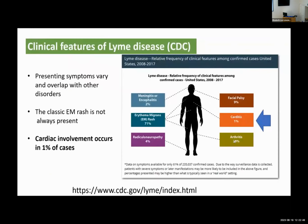This slide shows the clinical features of Lyme disease from the CDC. Lyme disease presenting symptoms vary and overlap with other disorders. The classic EM rash is not always present. Cardiac involvement occurs in 1% of cases. This chart shows the relative frequency of clinical features among confirmed cases in the United States from 2008 to 2017: 2% meningitis, 71% EM rash, 4% neuropathy, 9% facial palsy, 1% carditis, 28% arthritis.